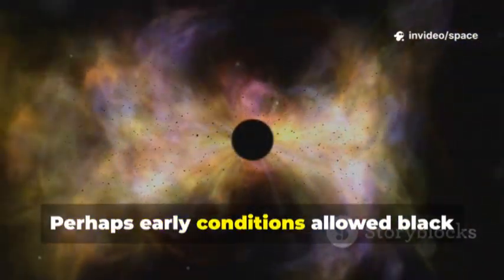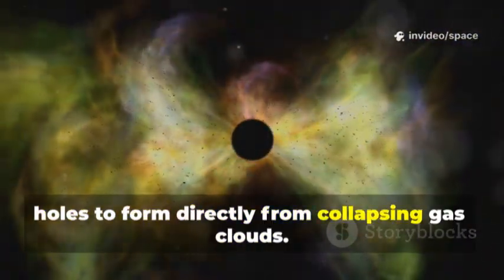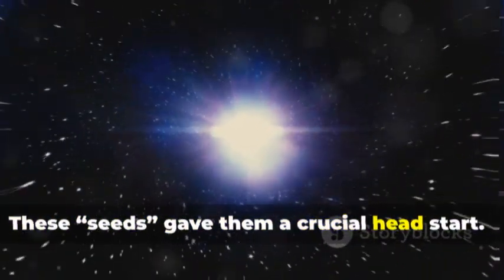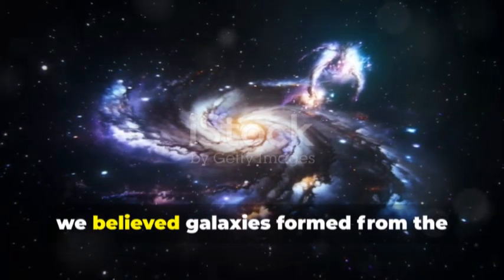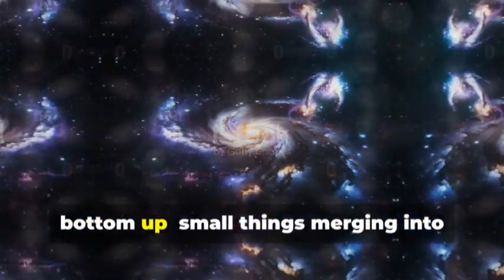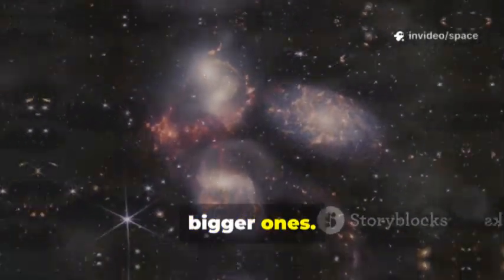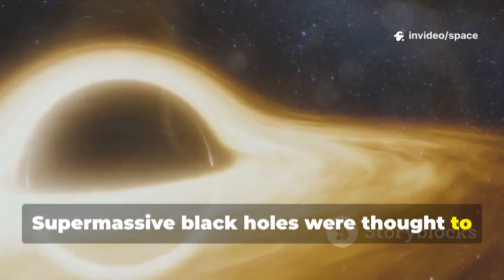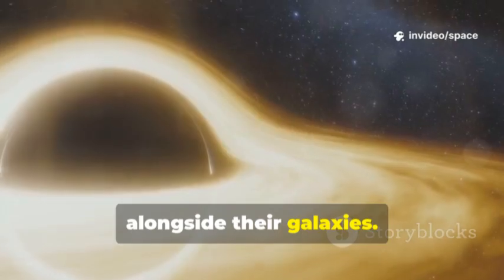Perhaps early conditions allowed black holes to form directly from collapsing gas clouds, these seeds gave them a crucial head start. For decades we believed galaxies formed from the bottom up, small things merging into bigger ones. Supermassive black holes were thought to grow slowly, alongside their galaxies.